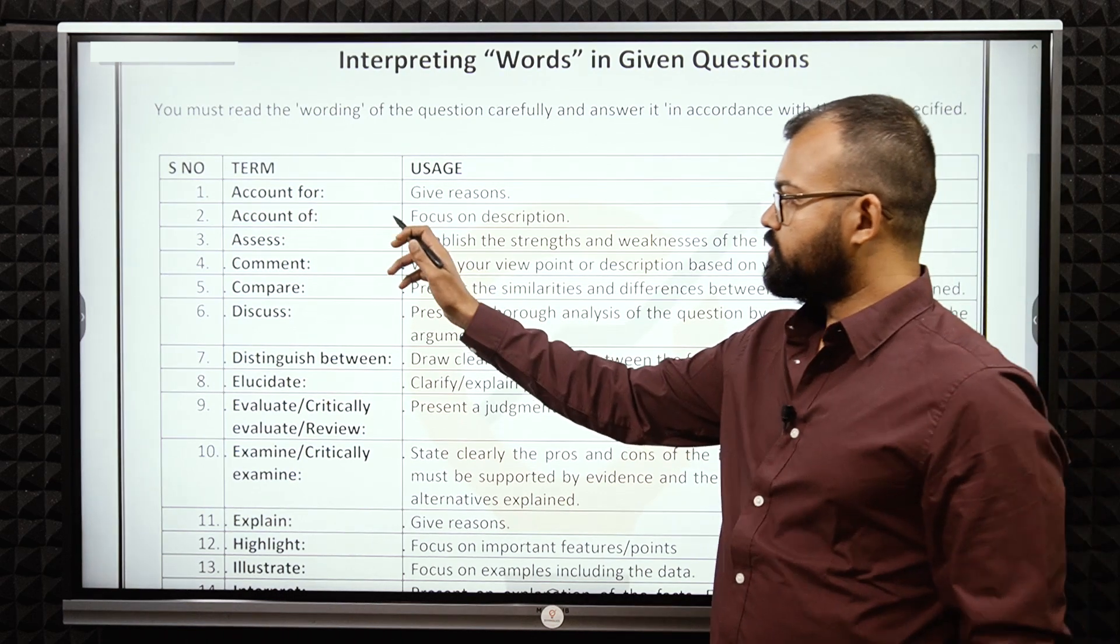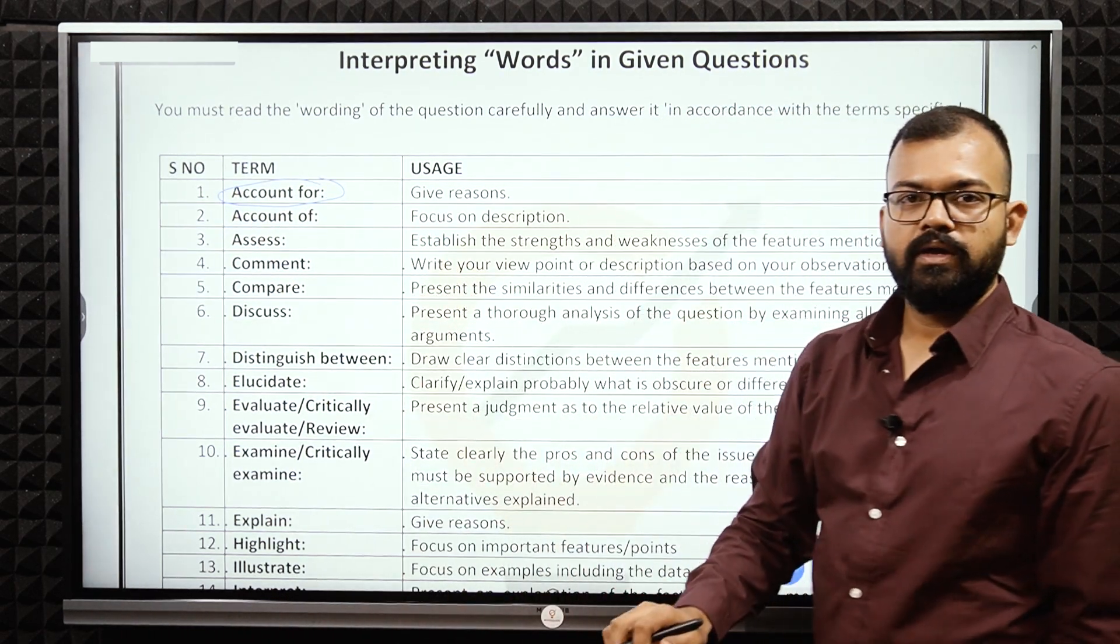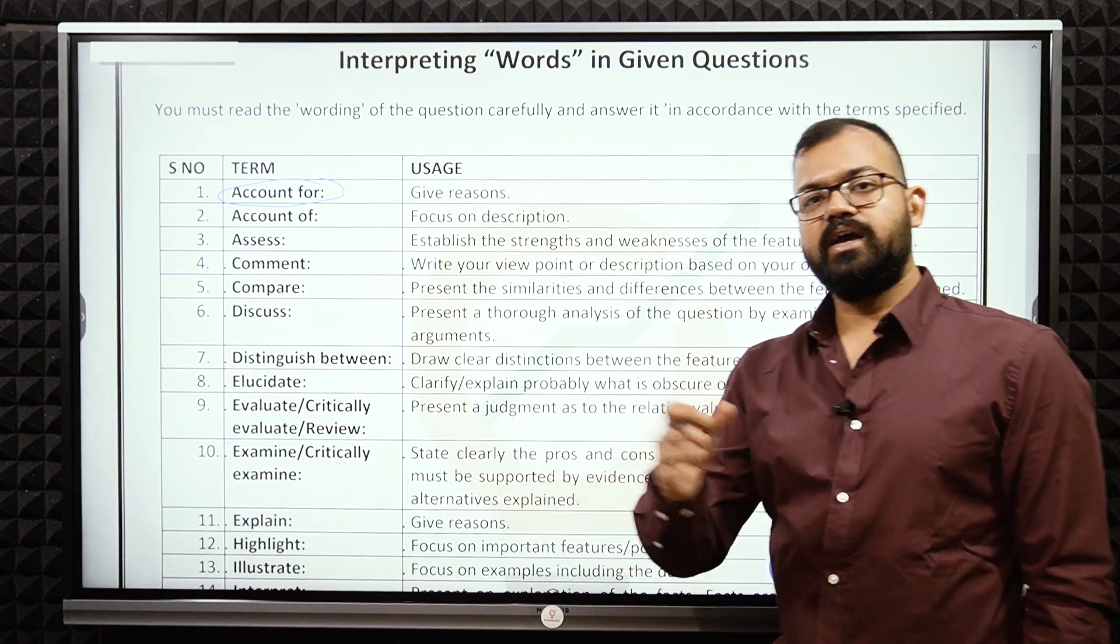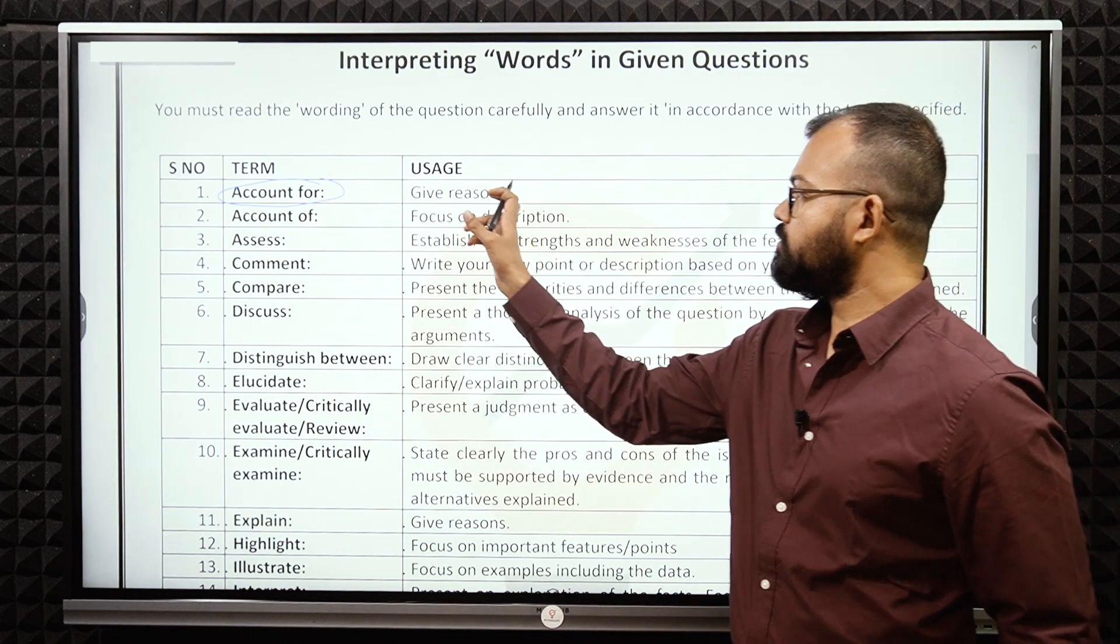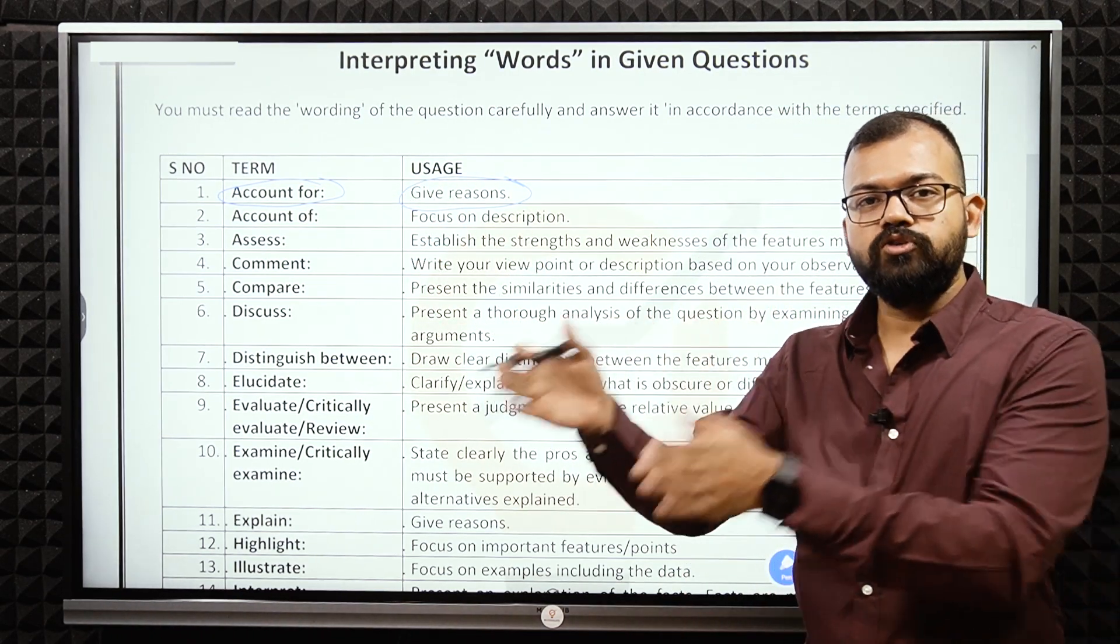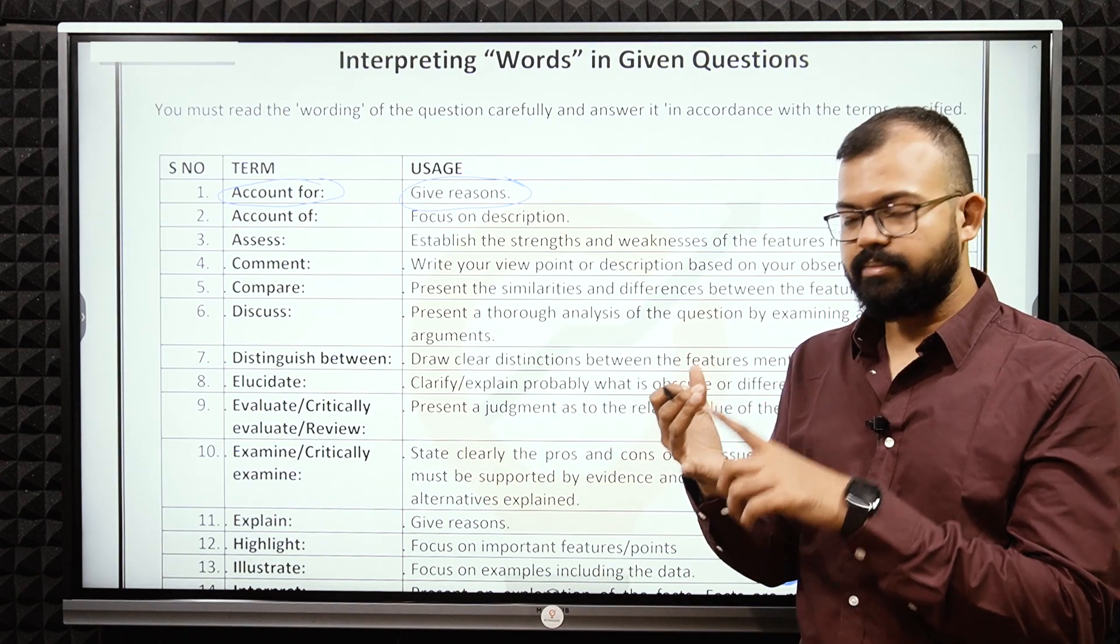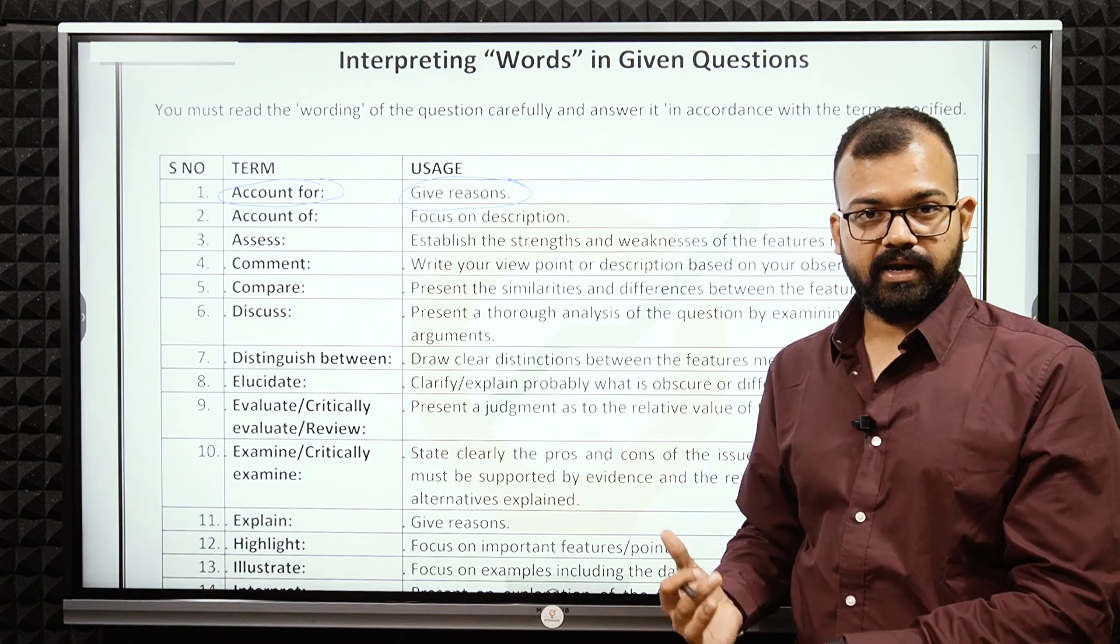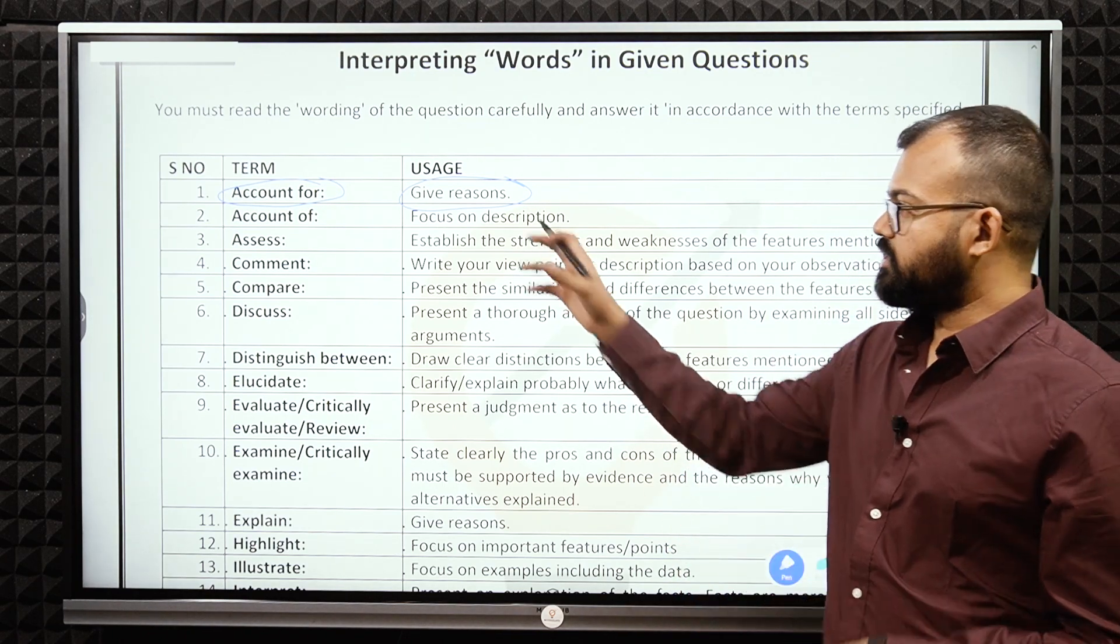The first one is account for. If someone is asking any question like account for MGNREGA scheme, you have to give reasons. It means you're making account of everything. All the reasons why MGNREGA is important, why MGNREGA initially started, what are the benefits, etc. All the reasons you have to give.